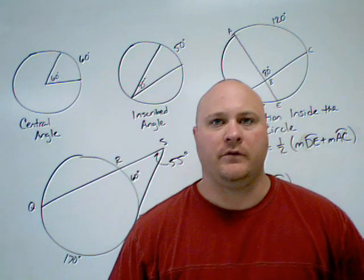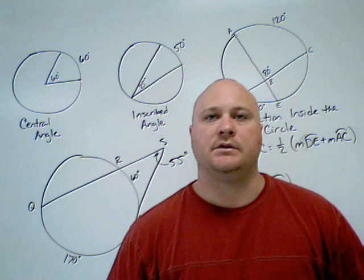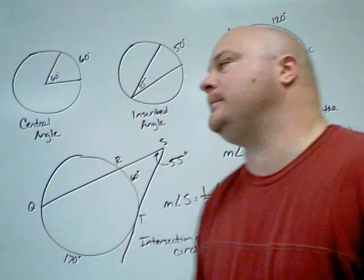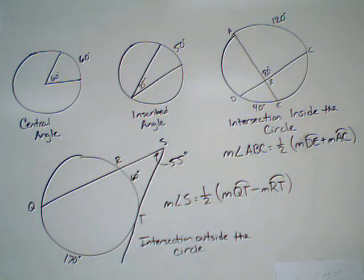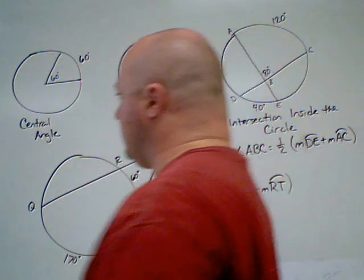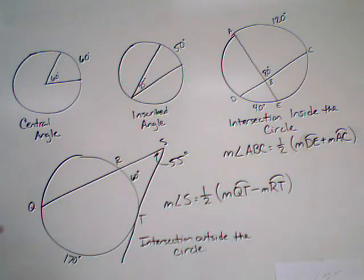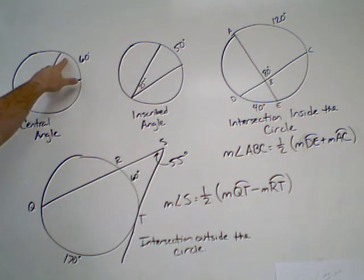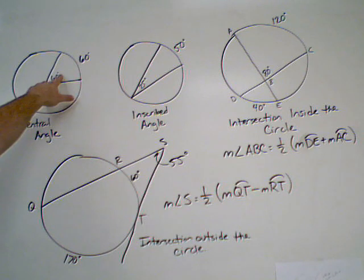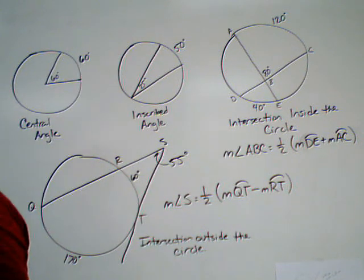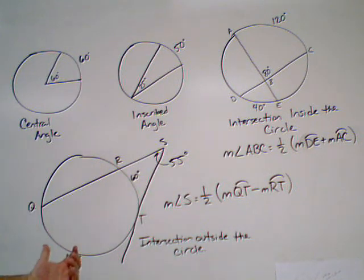Time for a quick review on angles dealing with circles. We have four up here and there's one more that I'm going to put up in a second. First, the easiest one: central angles. Central angles start in the center of the circle and intercept an arc. When they do that, the measure of the central angle is equal to the measure of the arc. So those are pretty easy—what you see is what you get.